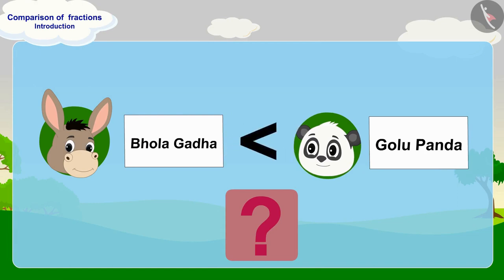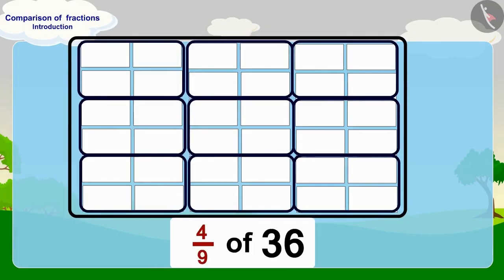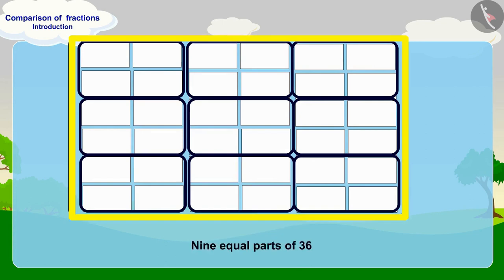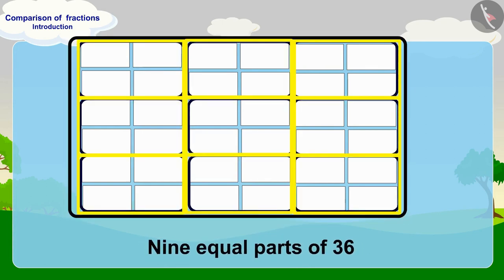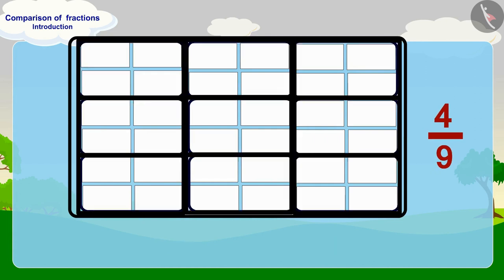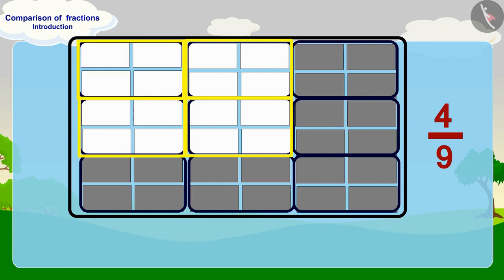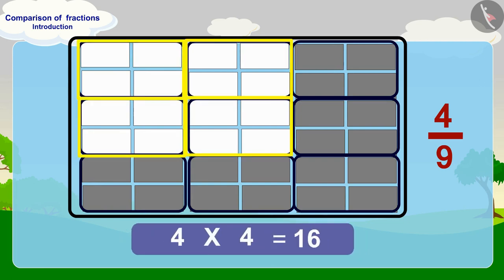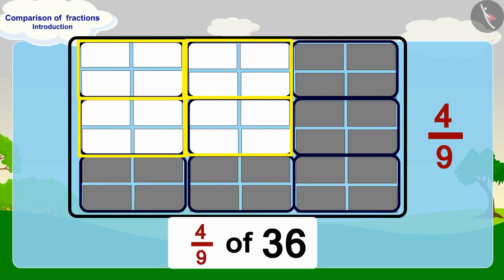Children, can you tell how many pieces of paper Bhola has written his name on? Are these more or less than the pieces on which Golu wrote his name? You may find the answer by pausing the video. Well done, children — you have found the right answer. Bhola has written his name on four-ninth parts of 36. For four-ninth of 36, we divide 36 into nine equal parts. Each part will have four pieces of paper. In four-ninth, we are taking four of these nine equal parts.